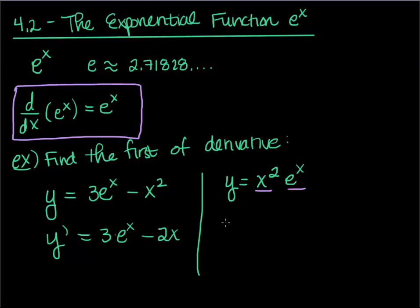The product rule says leave the first times the derivative of the second, but the derivative of e is just e, plus leave the second which is just e^x times the derivative of the first.